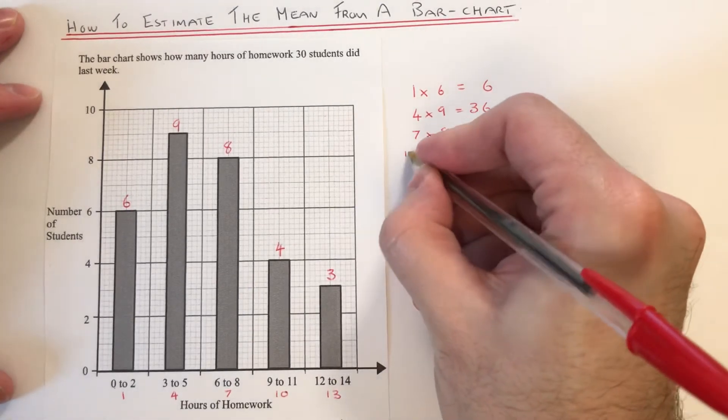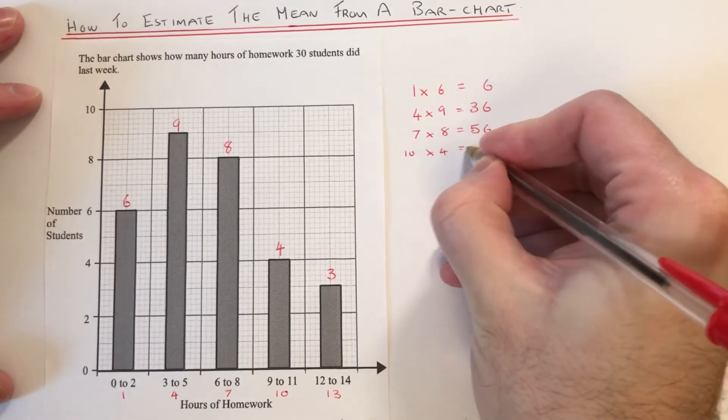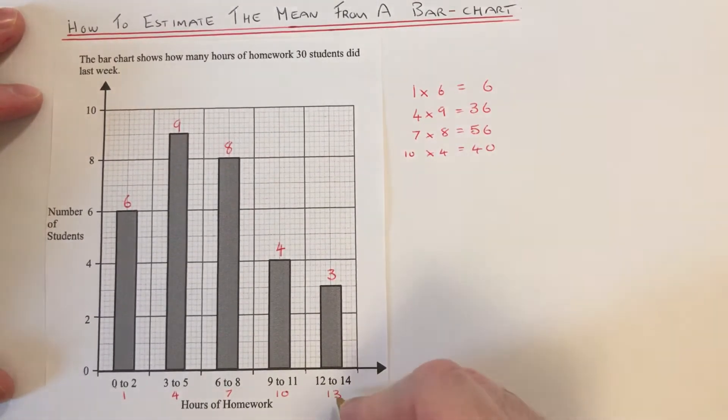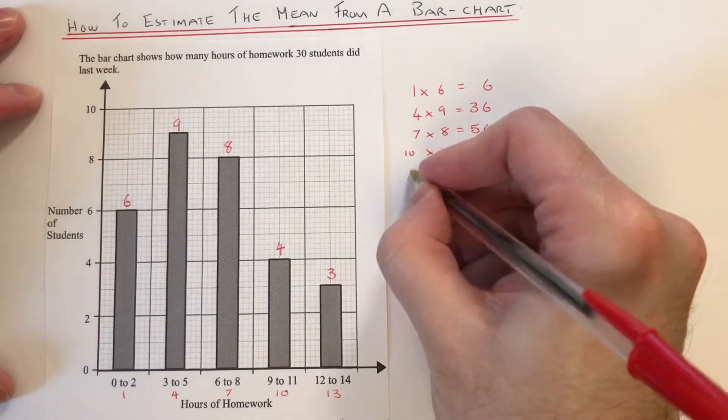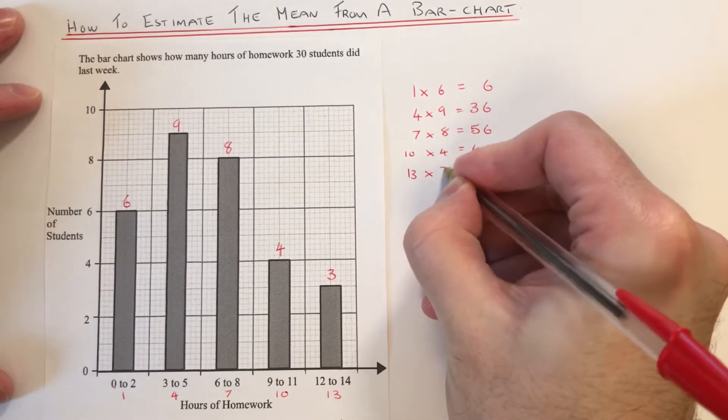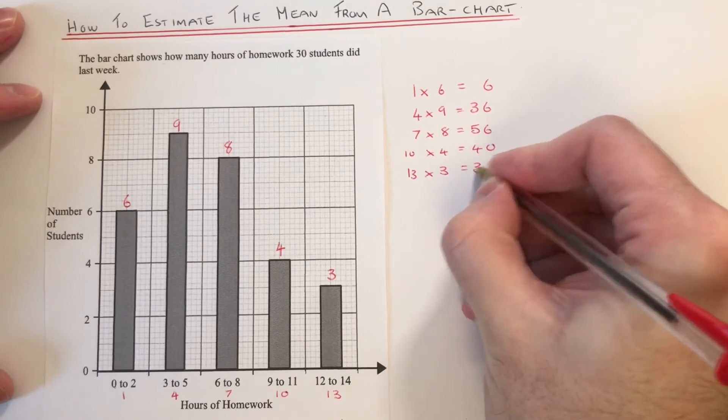Next one would be 10 times 4, which is 40, and the final one would be 13 times 3, which is 39.